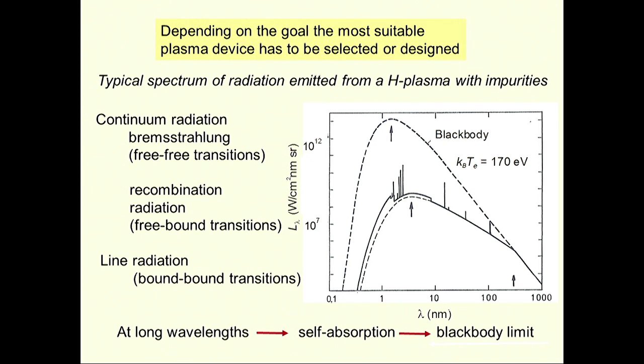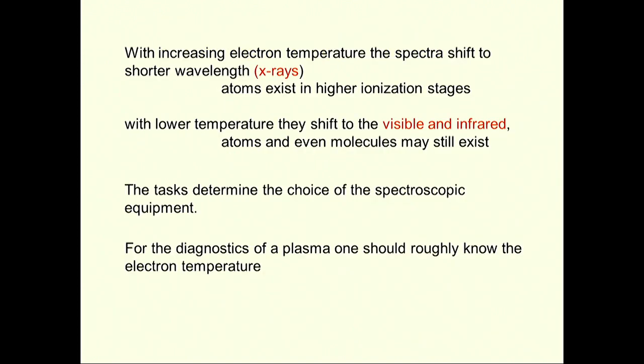But you can do it with line radiation. You put in more and more atomic species, and they grow and finally can reach the black body limit, so you have a black body radiator at one specific wavelength. The task here determines the choice of your spectroscopic equipment. You should roughly know the temperature; if you want to do X-ray spectroscopy, you cannot use a 1 eV plasma because there won't be any radiation in that regime. A rough knowledge of the temperature is helpful.